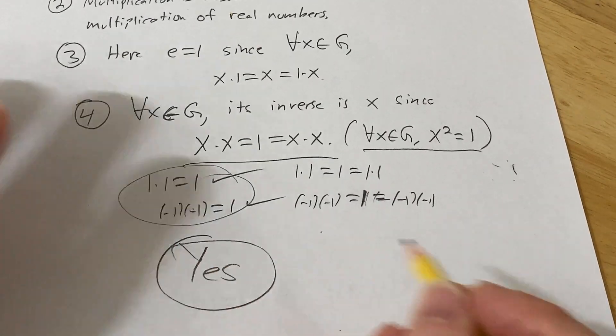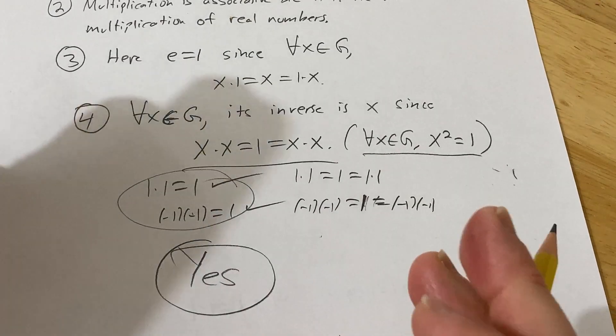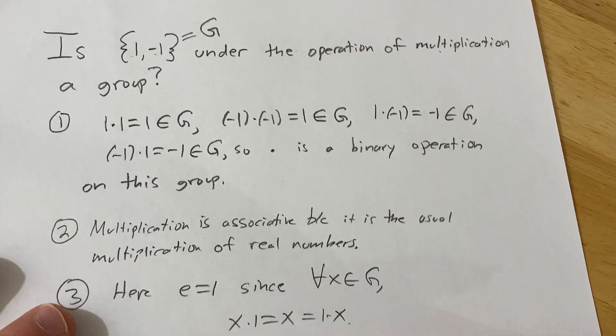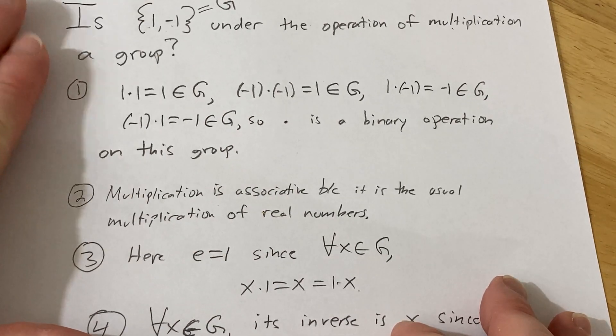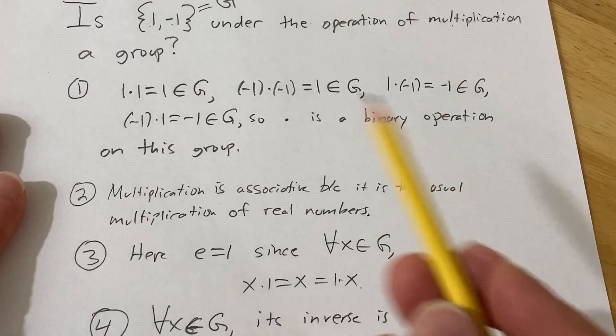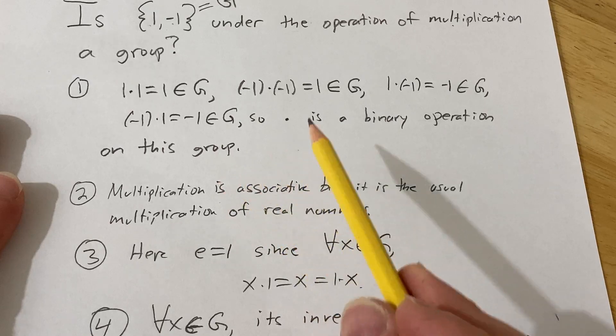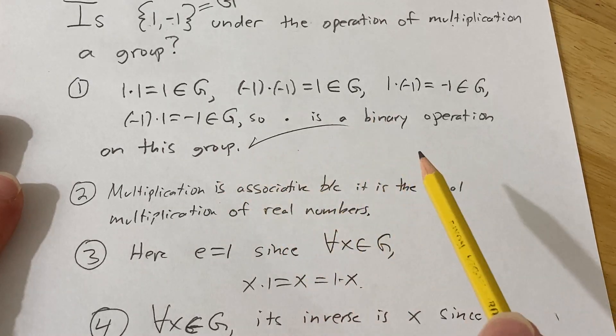So it's just a yes or no question. It's not really asking us to prove it, but we pretty much did. We're pretty thorough here in the explanation, hopefully. So whenever you have a set and you're asked to see if it's a group, you basically just go through and check all the criteria.